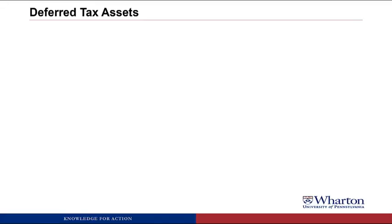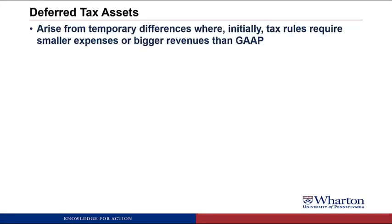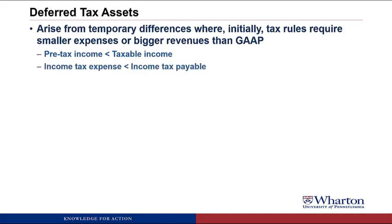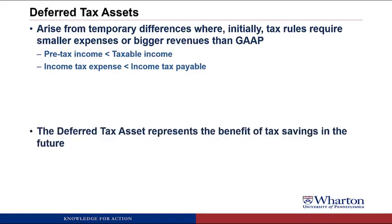We're going to continue our look at temporary differences with deferred tax assets. Deferred tax assets arise from temporary differences where initially, tax rules require smaller expenses or bigger revenues than GAAP. At the beginning of the transaction, you initially have smaller expenses or bigger revenues on the tax return, which means that pre-tax income is going to be less than taxable income. And if we have less pre-tax income, we must have less income tax expense, because both income numbers get multiplied by 35%. So income tax expense is less than income taxes payable. We're going to create a deferred tax asset, which represents the benefit of tax savings that we're going to get in the future.